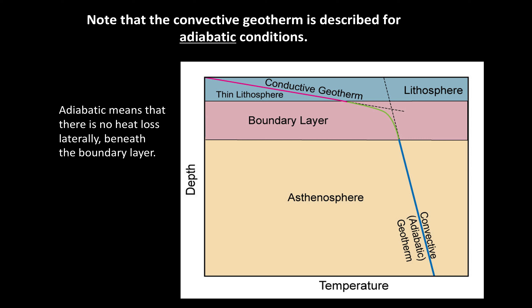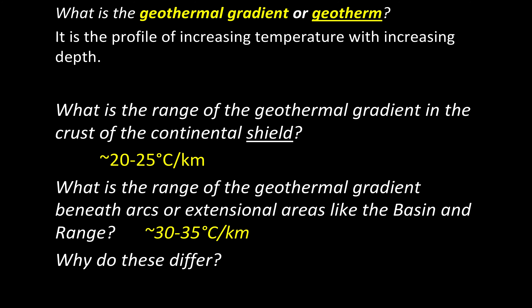Our knowledge of the geotherm is well determined at the surface of the earth. We have also drilled into the earth — the Soviet Union drilled into the Kola Peninsula approximately seven kilometers — and you can measure the temperature at each depth. We also have temperatures determined in very deep mines; for example, in South Africa the mines go down two kilometers. Where we have thick old continental crust or continental shield, we see that the temperature rises 20 to 25 degrees centigrade per kilometer of depth.